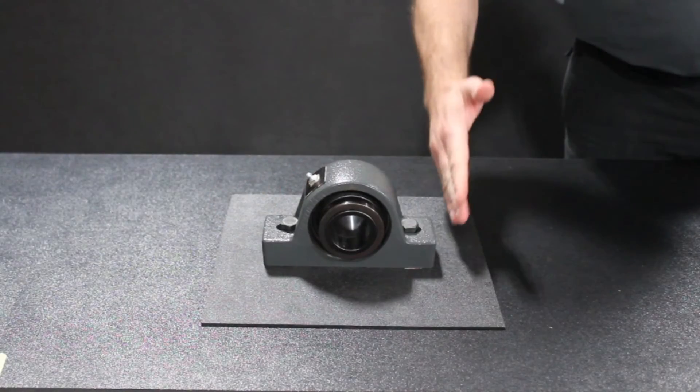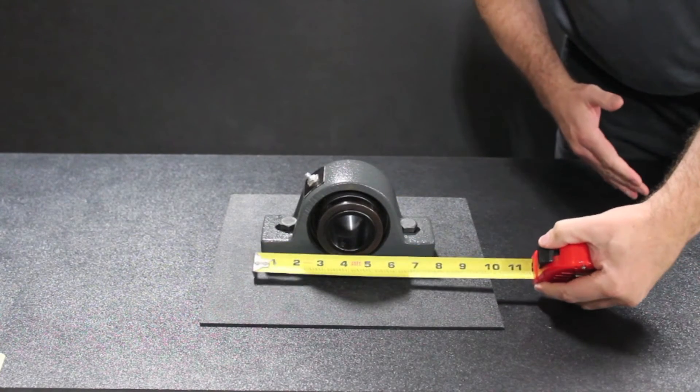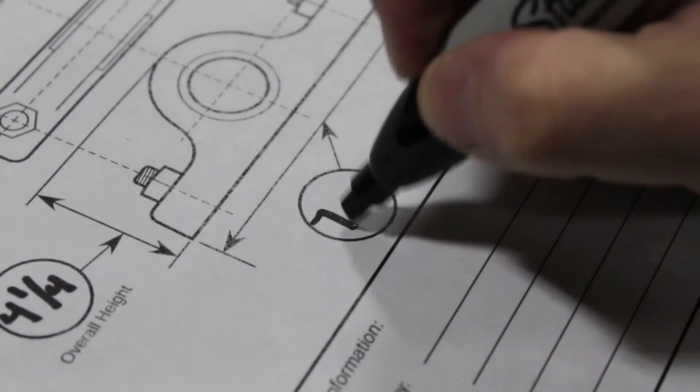The bearing's overall length is measured by finding the two longest points of the bearing and measuring the distance between them.